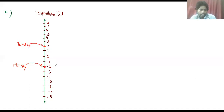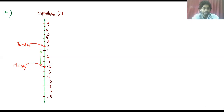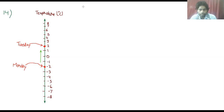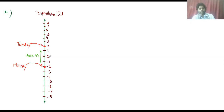If we look at the number line: we started at minus 2 and rose 4 degrees centigrade. Rise means going up. The rise is 4 degrees centigrade, so we rose to 2 degrees centigrade. That means Tuesday's temperature is 2 degrees centigrade.